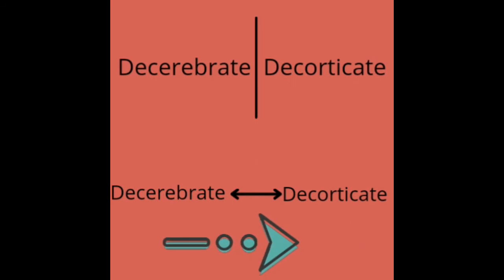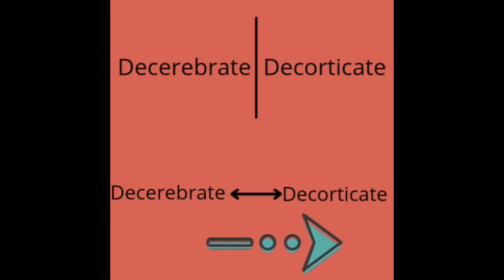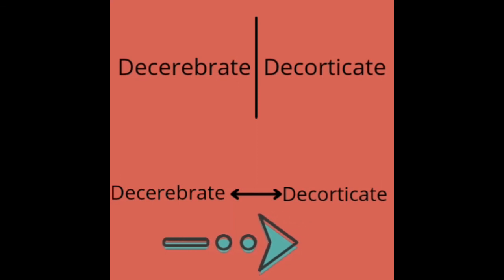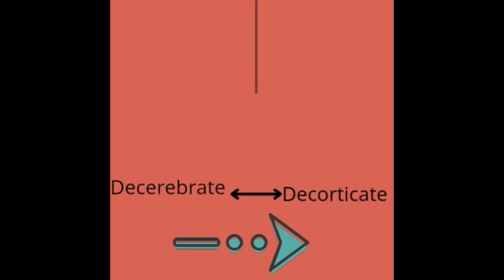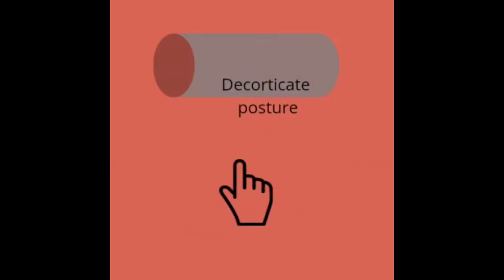In addition to decerebrate posturing, there is another abnormal posture — decorticate posturing. One patient may present with decerebrate posturing on one side and decorticate posturing on the other. It is also possible for a patient to transition between the two. My next video is about decorticate posturing — don't miss watching that. Thank you.